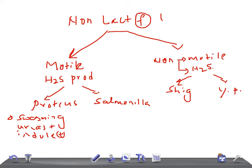Proteus produces a specific type of kidney stone known as Staghorn calculi. Proteus vulgaris is a very important species of Proteus. Diagnosis is by culture and sensitivity test, and remember the Weil-Felix test.